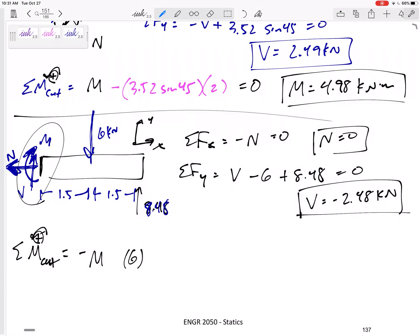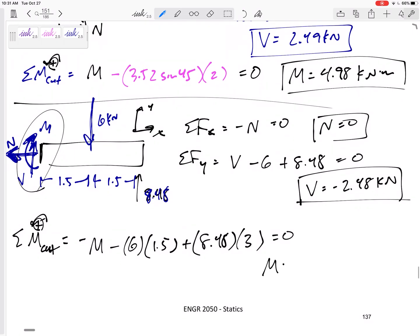So this is going to be a negative M because it would create a clockwise. This 6, 1.5, that would be negative because it's clockwise. And then 8.48 times 3 would be positive. Set that equal to zero. And I would get an M of 16.4 kilonewton meters.